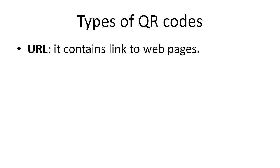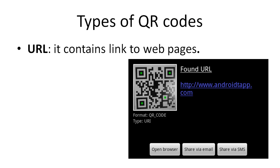The code might contain a URL for a website. Instead of typing the website URL manually into a browser, you can embed it in a QR code.